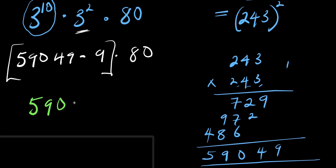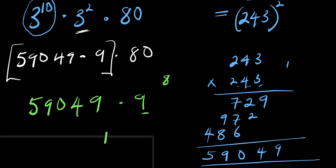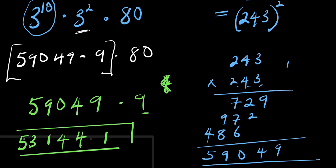Multiplying fifty-nine thousand and forty-nine by nine: nine times nine is eighty-one, carry eight; nine times four is thirty-six, plus eight is forty-four, so four carry four; nine times nine again — we work through each digit and arrive at five hundred thirty-one thousand four hundred forty-one.